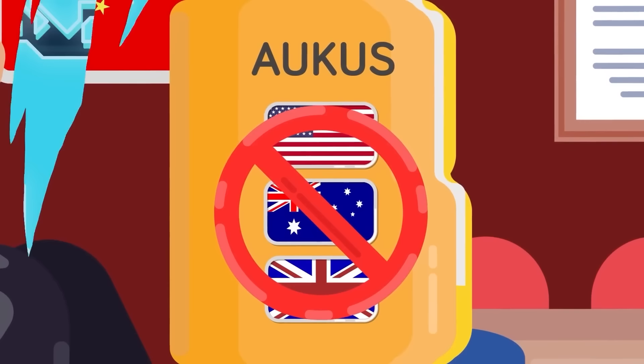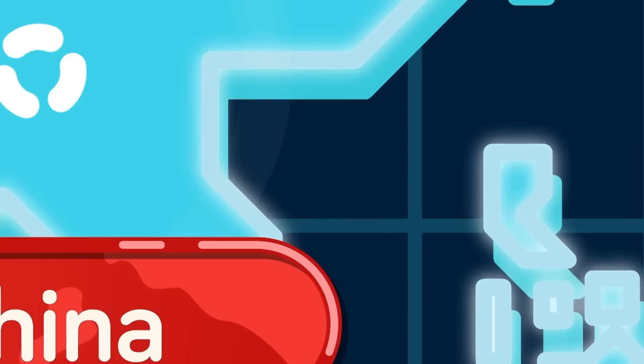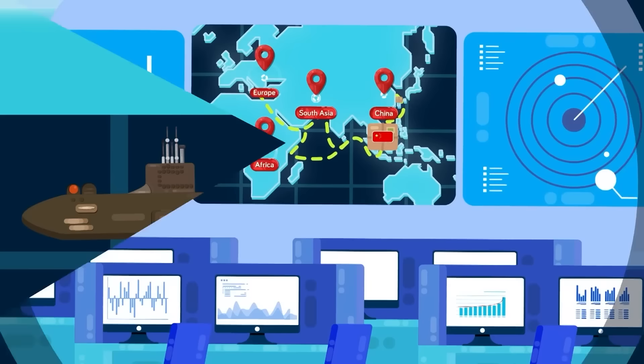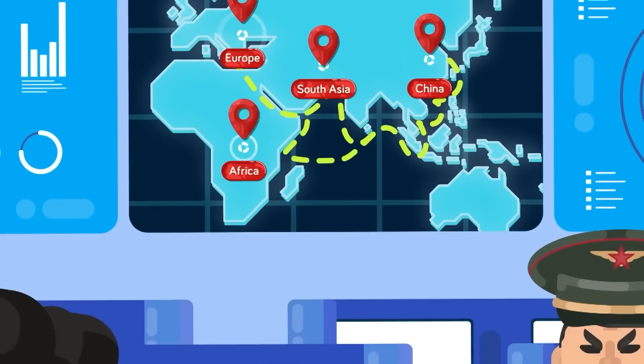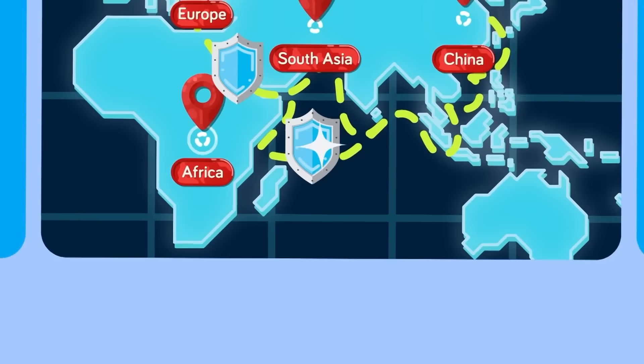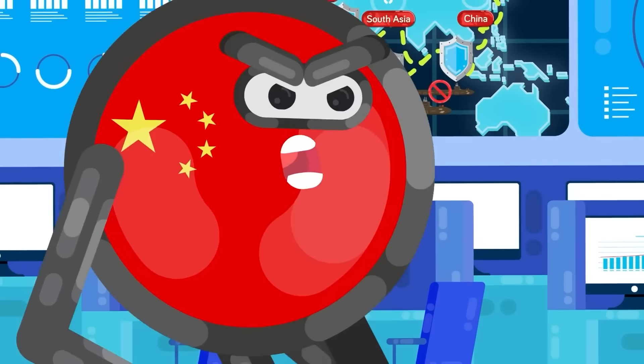However, it is the nuclear-powered submarines that China is the most upset about. Anything that will threaten their dominance of the Indo-Pacific waterways in the region is a cause for their concern. Again, it can't be understated how important these maritime routes are for global trade and the movement of military assets for China. They need to be able to counter any Western blockades that could be implemented in the future, and the only way to do that is through controlling key waterways in the region. Any vessels, especially nuclear-powered submarines, that may threaten China's ability to move freely in the Pacific and Indian Oceans will not be tolerated.